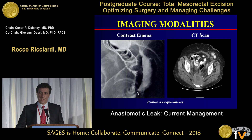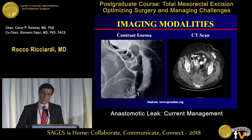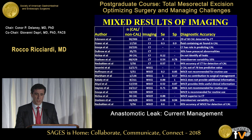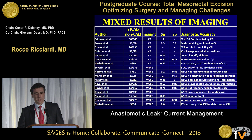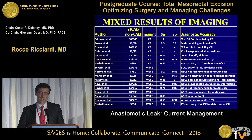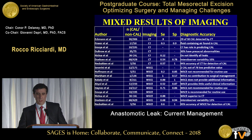Our usual imaging modalities for diagnosing anastomotic leak: contrast enema is routinely used and we're looking for extravasation. CT scan, which I prefer, not only shows extravasation if rectal contrast is infused, but also fluid collections, ischemia, or signs of obstruction. However, there are mixed results — sensitivities ranging from about 12% to 90% for either CT or water-soluble studies, with much better specificities. There was substantial inter-observer variability, particularly when multiple radiologists were reading the images, and we are not able to identify all leaks with these imaging tests.